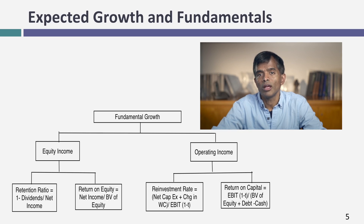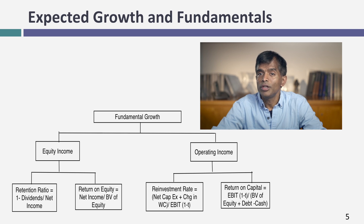Here's the key point: growth in a company has to be earned — it can't be endowed. For a company to have high growth, it's got to pull off a fairly tough trick. First, it must reinvest a big chunk of its earnings back in the business — so how much you reinvest is the first question. The second is how well you reinvest. For an equity valuation, how much you reinvest is measured by the retention ratio — the percentage of net income not paid out as dividends — and how well you reinvest is measured by the return on equity. So if you have a retention ratio of 80% and a return on equity of 30%, 80% of 30% is 24%, which becomes the growth in net income.